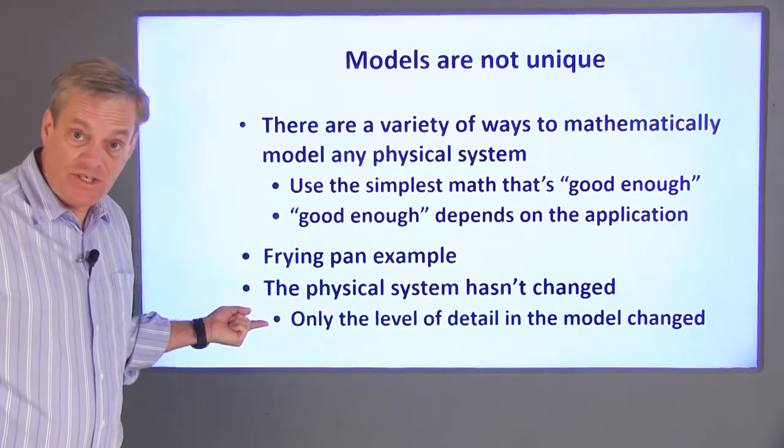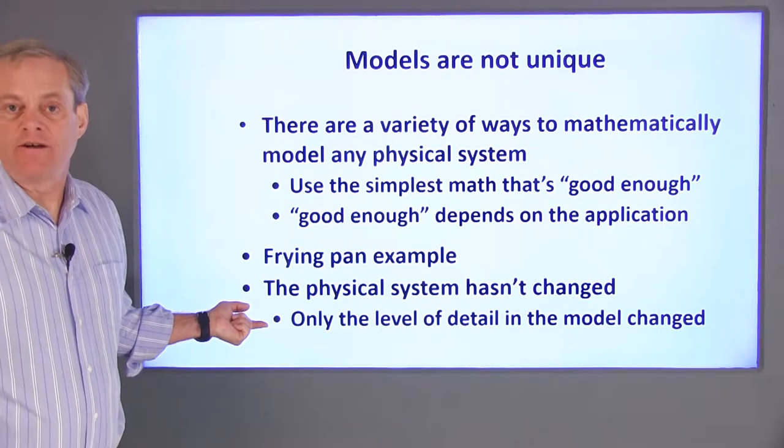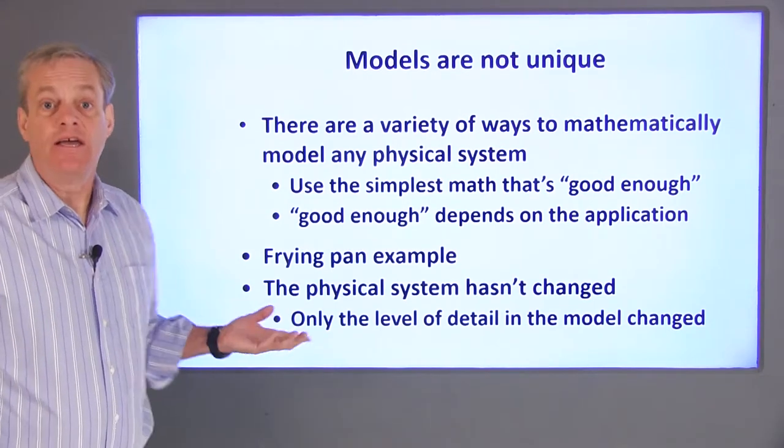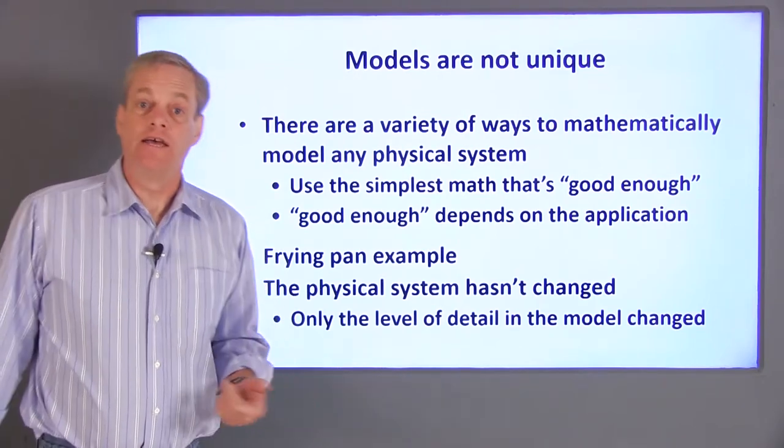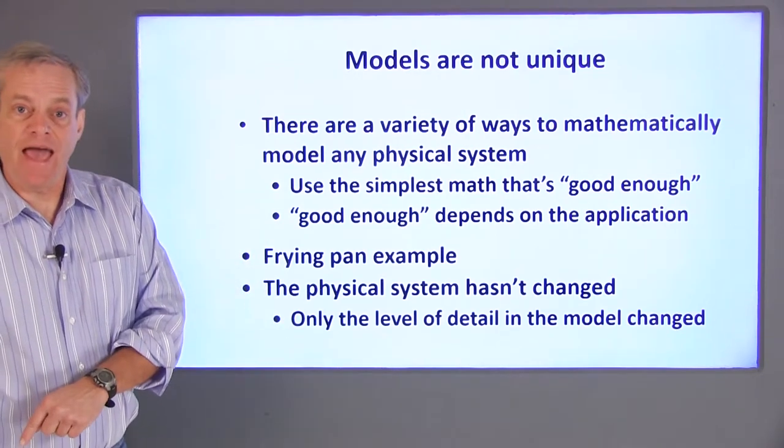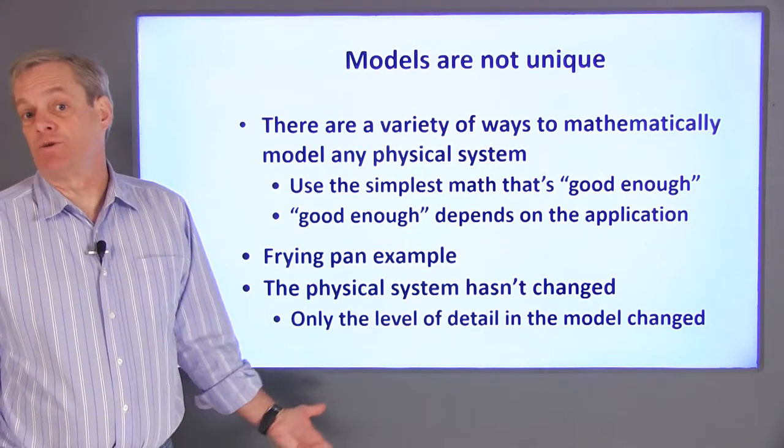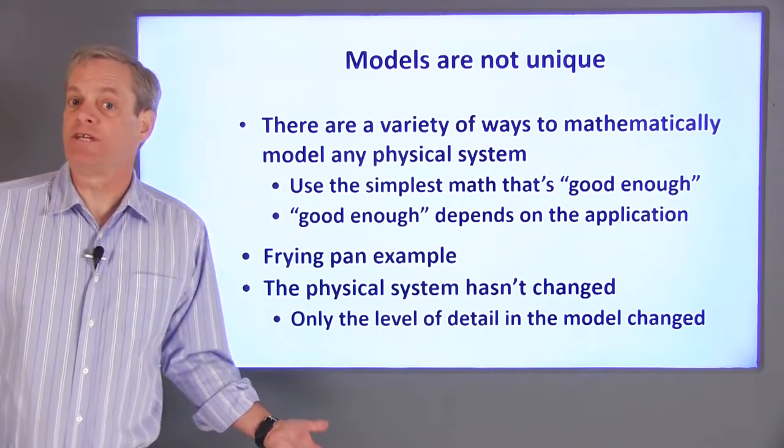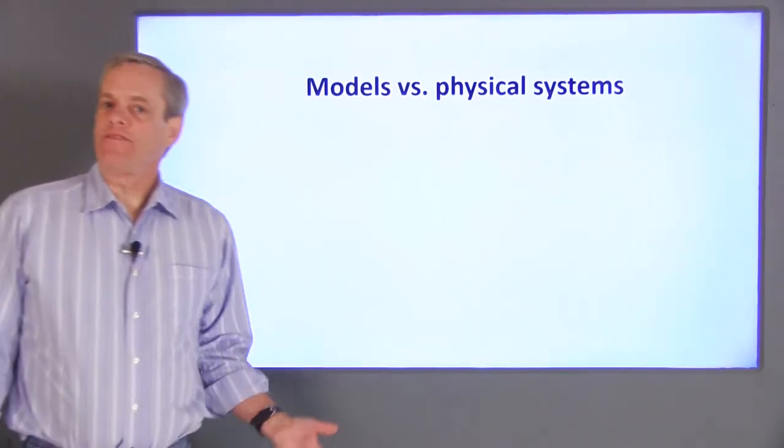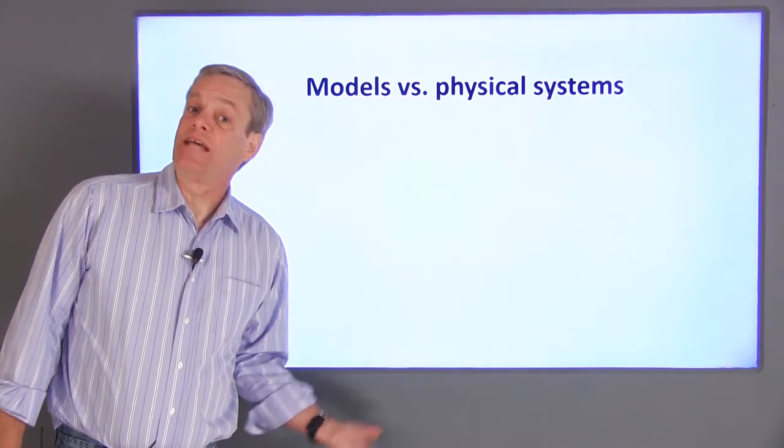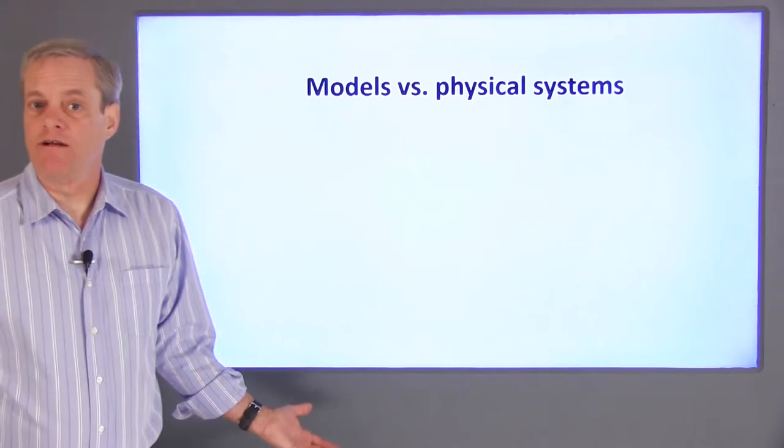What has changed is the level of detail in our mathematical model of the system. If we only need an average temperature, we probably only need a single unknown in our model. If we need a temperature distribution in the pan, we may need hundreds or even thousands of variables for the temperatures at a variety of points in the frying pan. The mathematical model of a system is separate from the physical system itself.